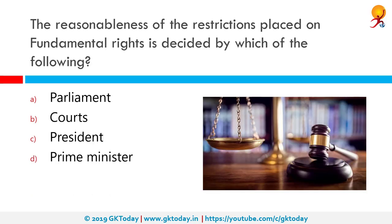The reasonableness of the restrictions placed on fundamental rights is decided by which of the following? The correct answer is the courts. The court is called upon to ascertain the reasonableness of the restriction, and not of the law which permits the restriction. A law may be reasonable but the restriction imposed by it on the exercise of freedom may not be reasonable.